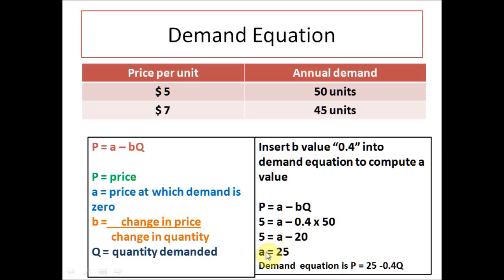In order to get a, we would bring 20 on the other side of the equal sign which will give us 20 plus 5 is 25. a equals 25. We have our demand equation. So demand equation is P equals 25 minus 0.04Q.